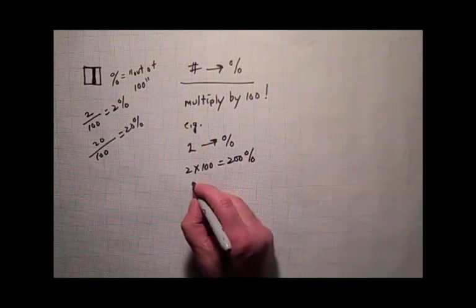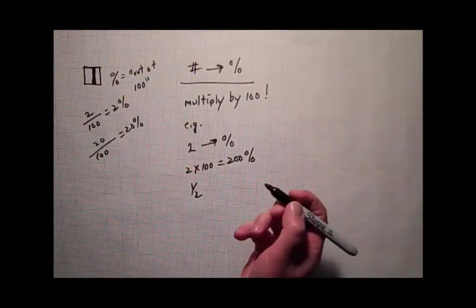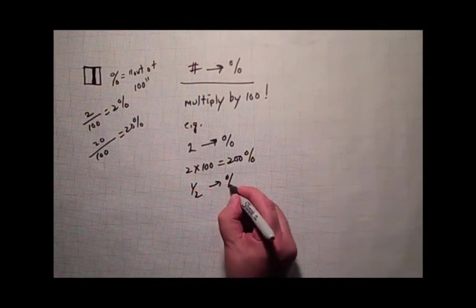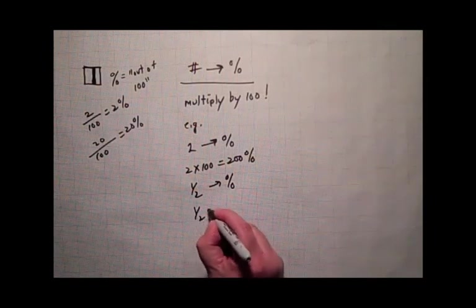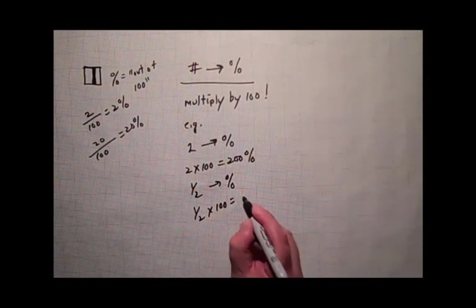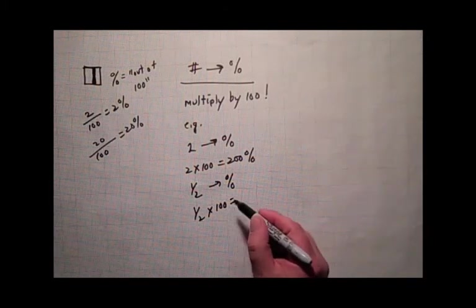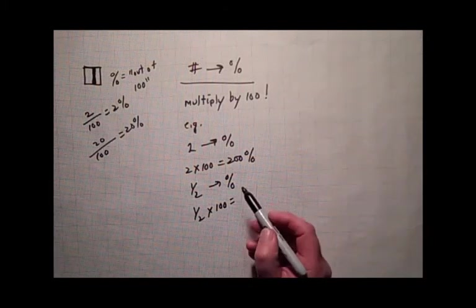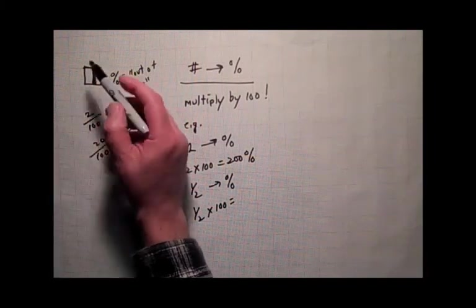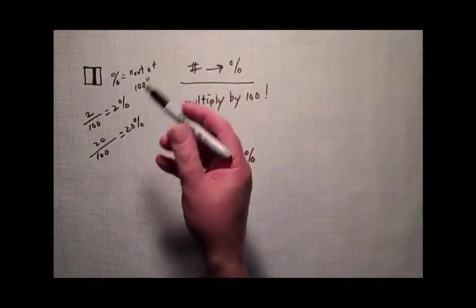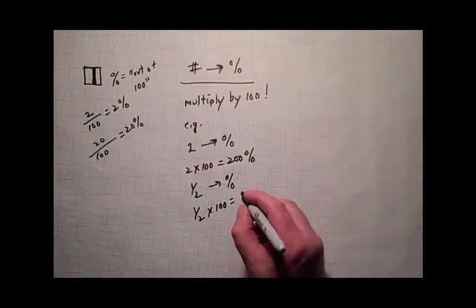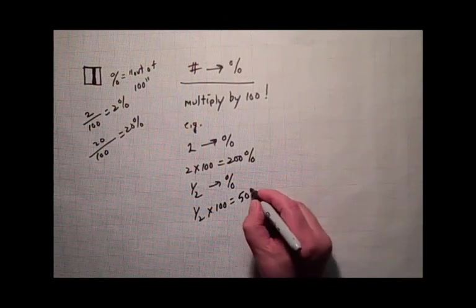What if the number is, say, 1 half. Fine. Convert that to a percent. 1 half times 100 is half of 100 is 50 because 2 times 50 is 100. If I was thinking about the squares here, if I had half of them shaded out of 100, how many would be shaded? Well, 50 out of 100 would be shaded.